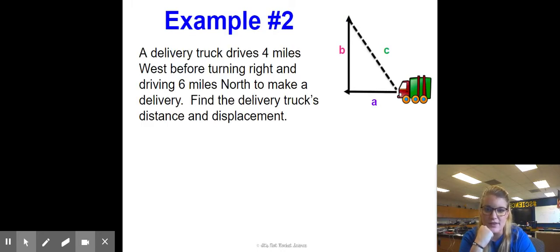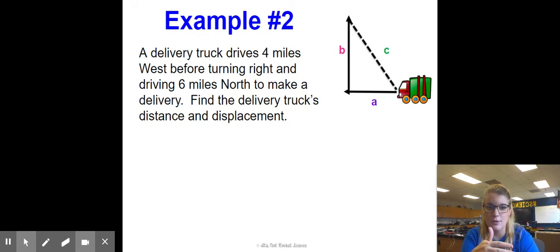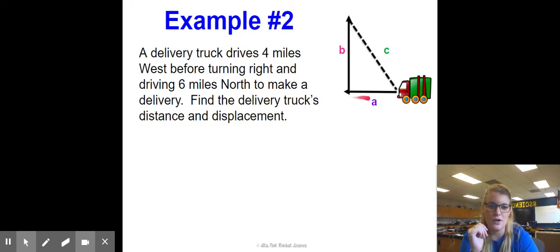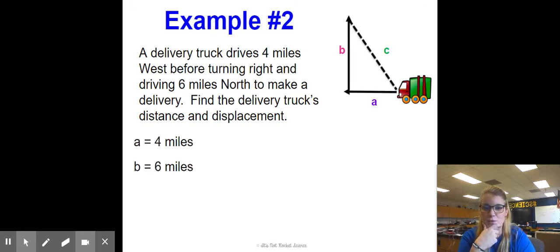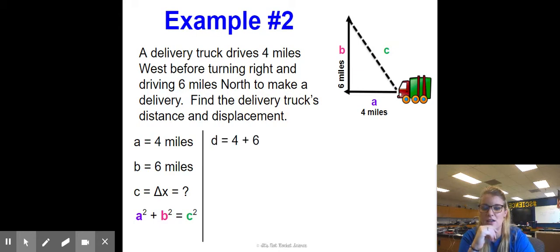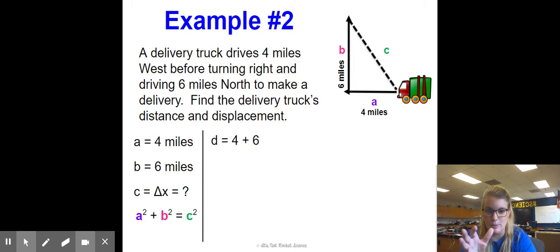Using the Pythagorean theorem: a delivery truck drives four miles west before turning right and driving six miles north to make a delivery. We draw out four miles west and six miles north to form a right triangle. To find the distance, we just take four plus six — like reading the truck's odometer — which gives us ten miles.